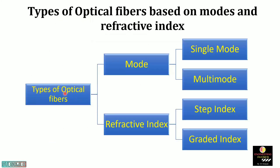There are two types of Optical Fibre. Number one, on the basis of mode, and number two, on the basis of refractive index. On the basis of mode, they are further divided into two types: Single Mode Optical Fibre and Multi Mode Optical Fibre. On the basis of refractive index, they are further divided into Step Index Optical Fibre and Graded Index Optical Fibre.